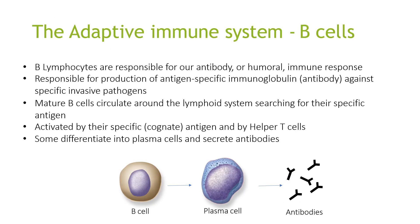B lymphocytes are responsible for our antibody or humoral immune response. They are responsible for the production of antigen-specific immunoglobulins against specific invasive pathogens. Mature B cells circulate around the lymphoid system searching for the specific antigen. They are activated by the specific antigen and by helper T cells, and some differentiate into plasma cells that create antibodies.